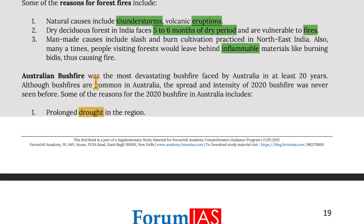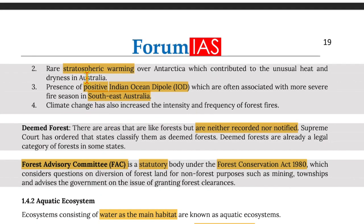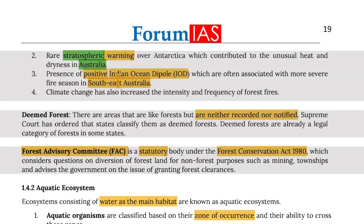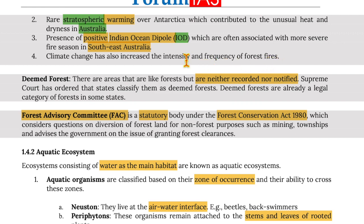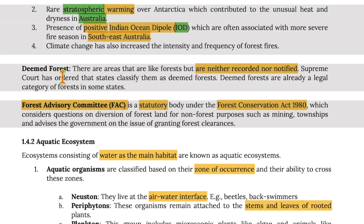The Australian bushfire was the most devastating bushfire faced by Australia in at least 20 years. Although bushfires are common in Australia, the spread and intensity of the 2020 bushfire was unprecedented. Reasons include prolonged drought, rare stratospheric warming over Antarctica contributing to unusual heat and dryness, the presence of a positive Indian Ocean Dipole often associated with more severe fire seasons in southeast Australia, and climate change increasing the intensity and frequency of forest fires.